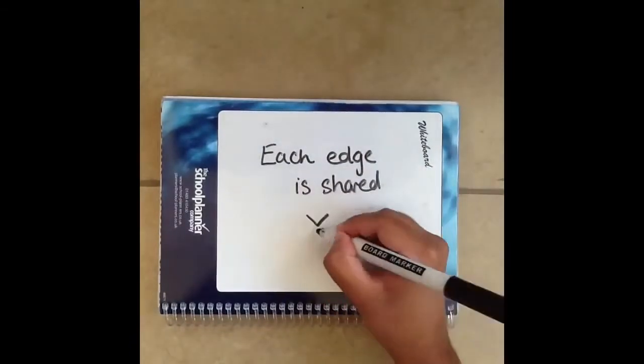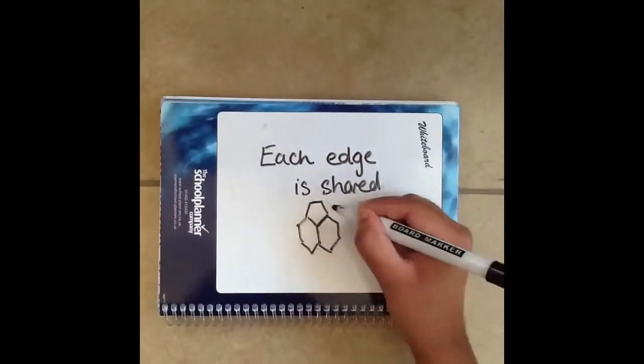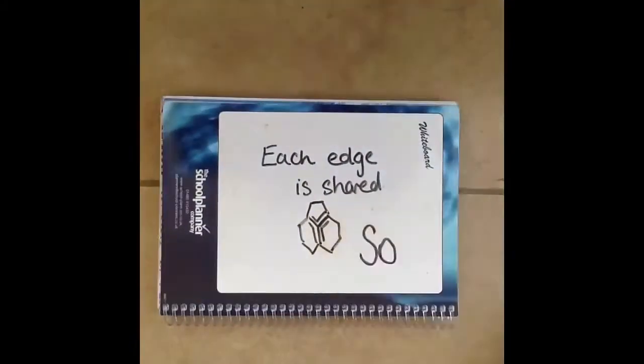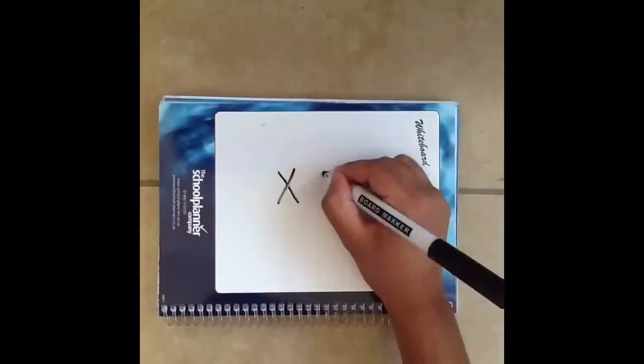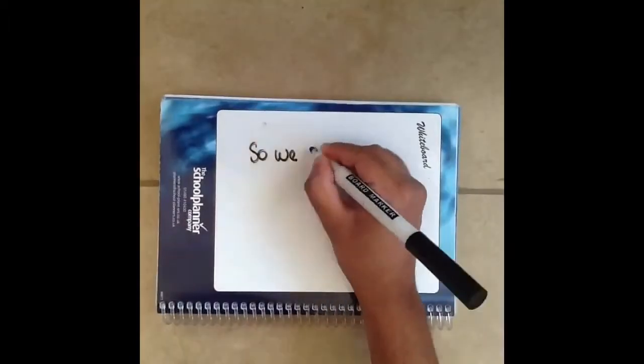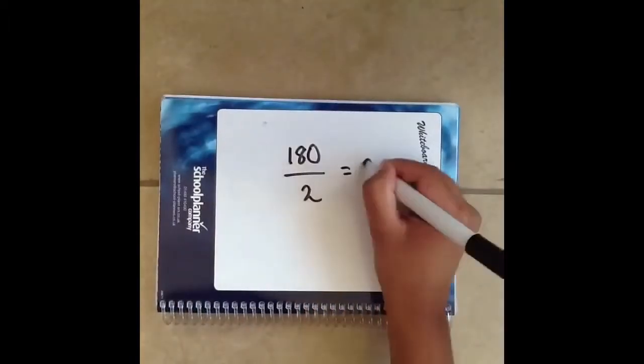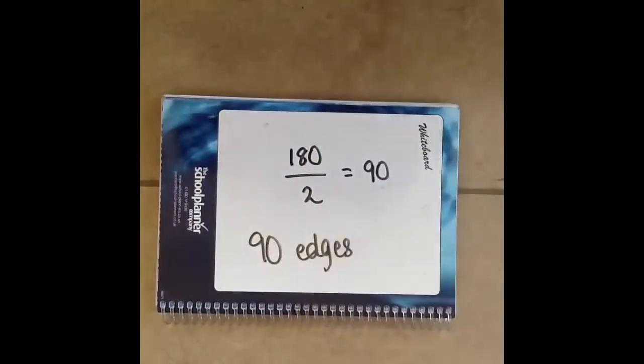But each edge is shared, so each edge is counted twice. Therefore, we have to divide the number of edges by 2 and that gives us 90 edges.